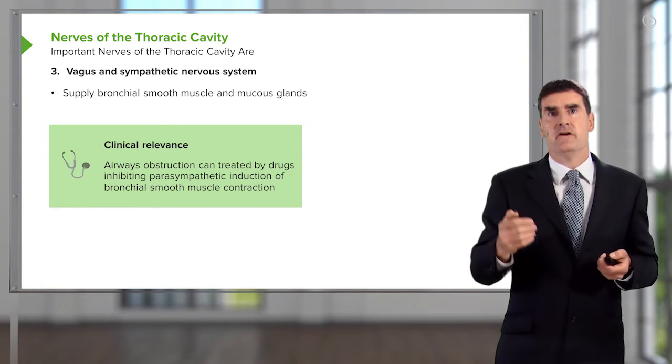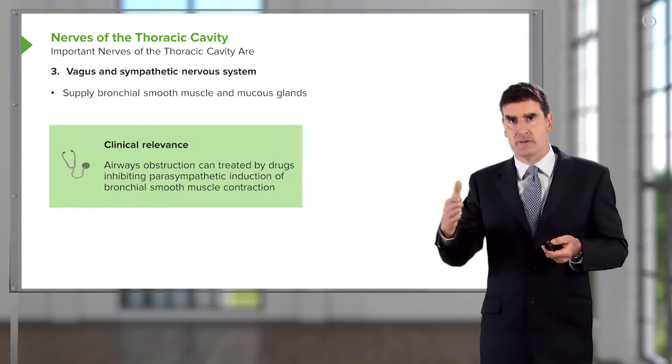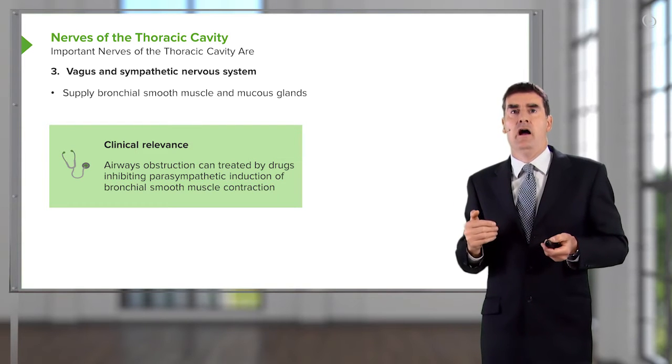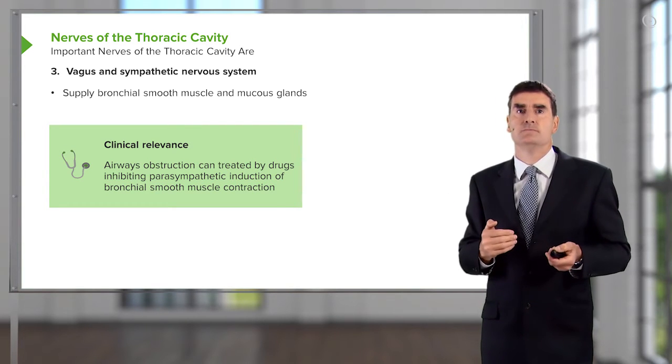The vagus and sympathetic nerve system also supplies the mucous glands — mainly the vagus nerve — and stimulates the production of mucus.